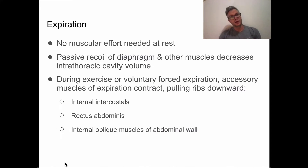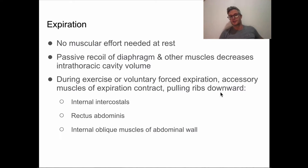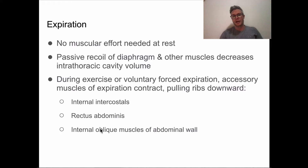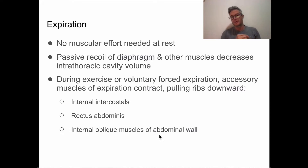When we're exercising or doing a conscious forced exhalation, three muscle groups help out. The internal intercostals are deeper than the external intercostals between our ribs. The rectus abdominis — commonly referred to as the six-pack muscles — run up and down at the front of our abdomen. And the internal oblique muscles, which are deeper, are the third layer. All three help with forced exhalation.